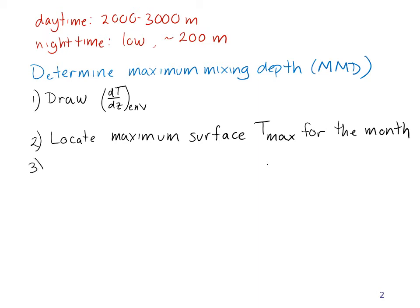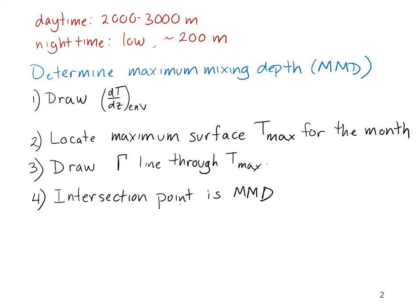Third, we draw our adiabatic lapse rate line through T_max. And fourth, the intersection point of these two lines is the maximum mixing depth.